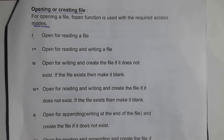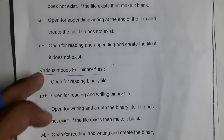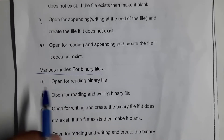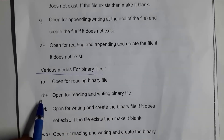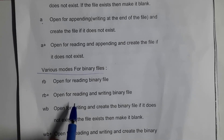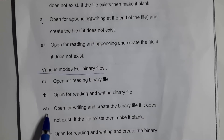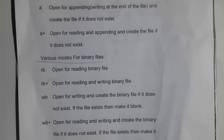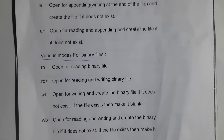The binary file modes are similar to the text file modes. 'rb' stands for read binary — you can only read a binary file. 'rb+' mode allows you to both read and write a binary file. 'wb' stands for write binary — you can write to a binary file. 'wb+' mode allows you to both read and write a binary file.